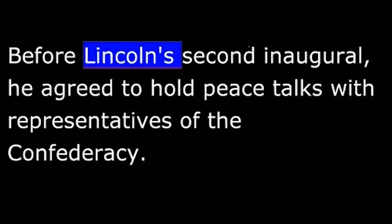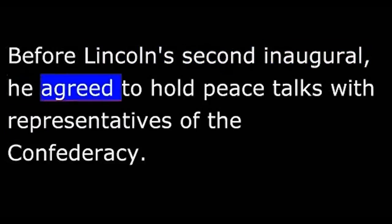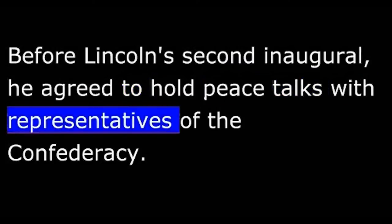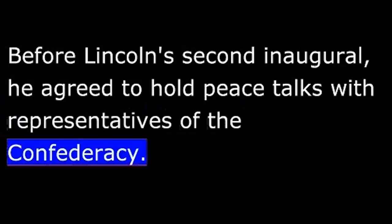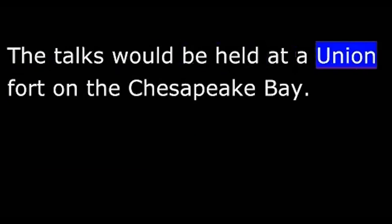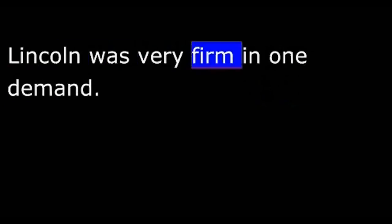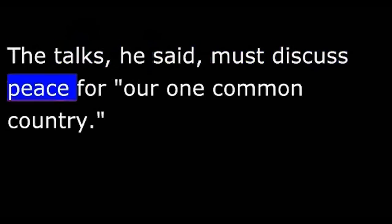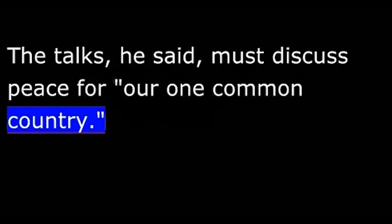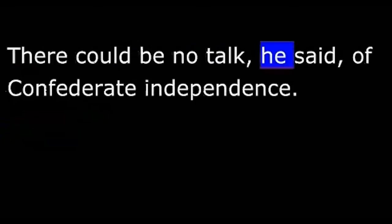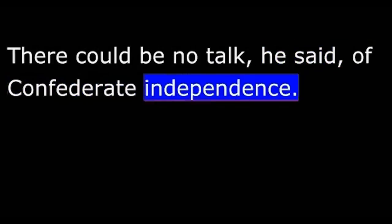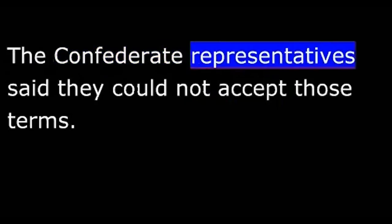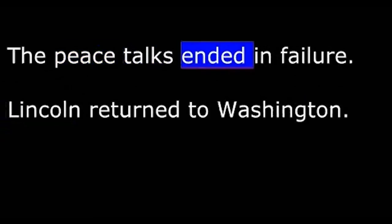Before Lincoln's second inaugural, he agreed to hold peace talks with representatives of the Confederacy. The talks would be held at a Union fort on the Chesapeake Bay. Lincoln was very firm in one demand: the talks, he said, must discuss peace for 'our one common country.' There could be no talk of Confederate independence. The Confederate representatives said they could not accept those terms, and the peace talks ended in failure.